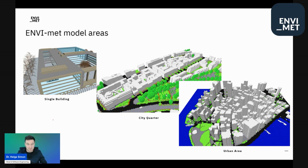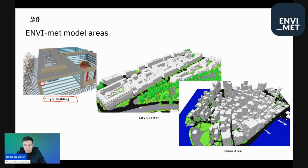Obviously, model areas can look very differently depending on what your scope is. They can be very high resolution when you maybe only take a look at a single building, where you place some windows or rows of windows, have some undercuts, a courtyard inside, etc. This is especially the case when you're interested in high-resolution modeling of maybe building physics.